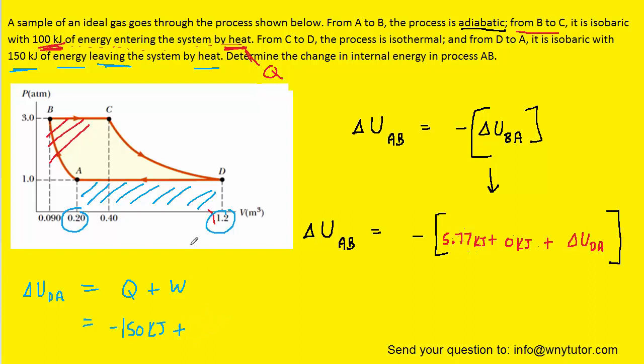We can see that the base of the rectangle is 1.2 minus 0.2, so that'll just be 1 meter cubed. And then the pressure or the height of the rectangle is 1 atm. Once again, we need to convert that into the standard unit of kilopascals by noting that 1 atm is 101.325 kilopascals. And that comes out to negative 48.7 kilojoules. So we're going to fill that in for the change in internal energy from D to A.